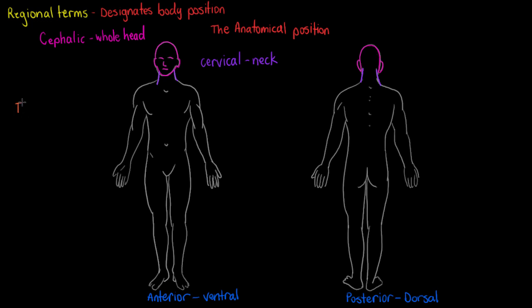Moving on to our next one is the thoracic region. The thoracic region is going to include all of your chest above where your ribcage ends, and also the anterior aspect of your body — so we name the back differently. We've got everything just above the ribcage here, joining back up to the cervical area of the body. Just writing in quickly that the thoracic region is our chest, before we move on to the next region.